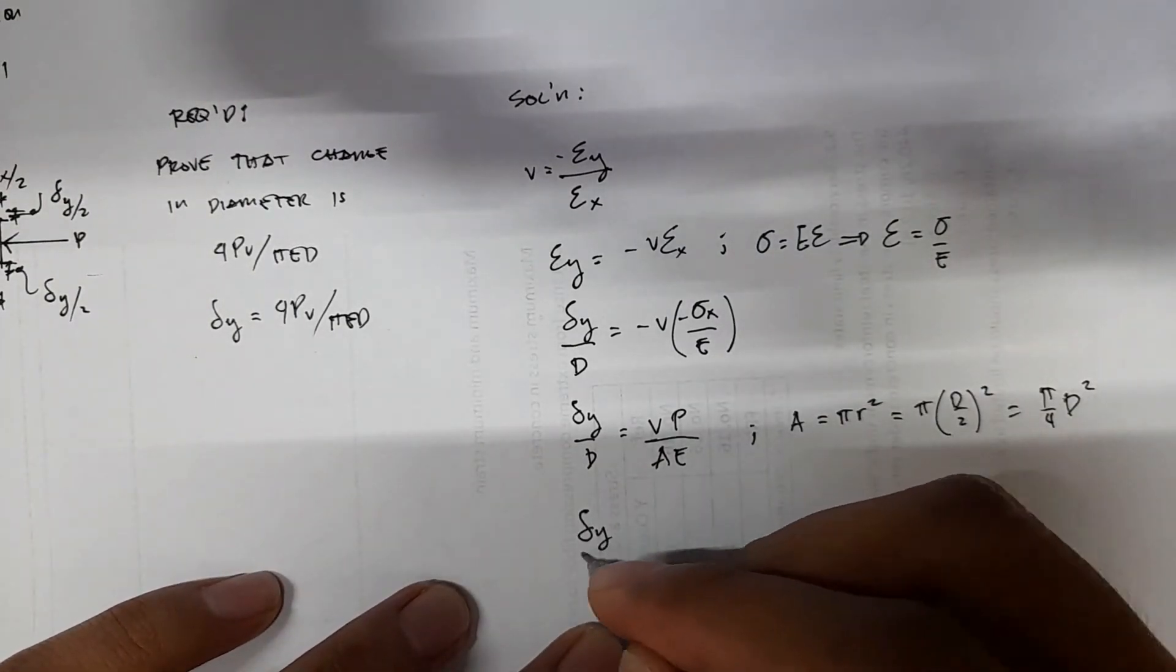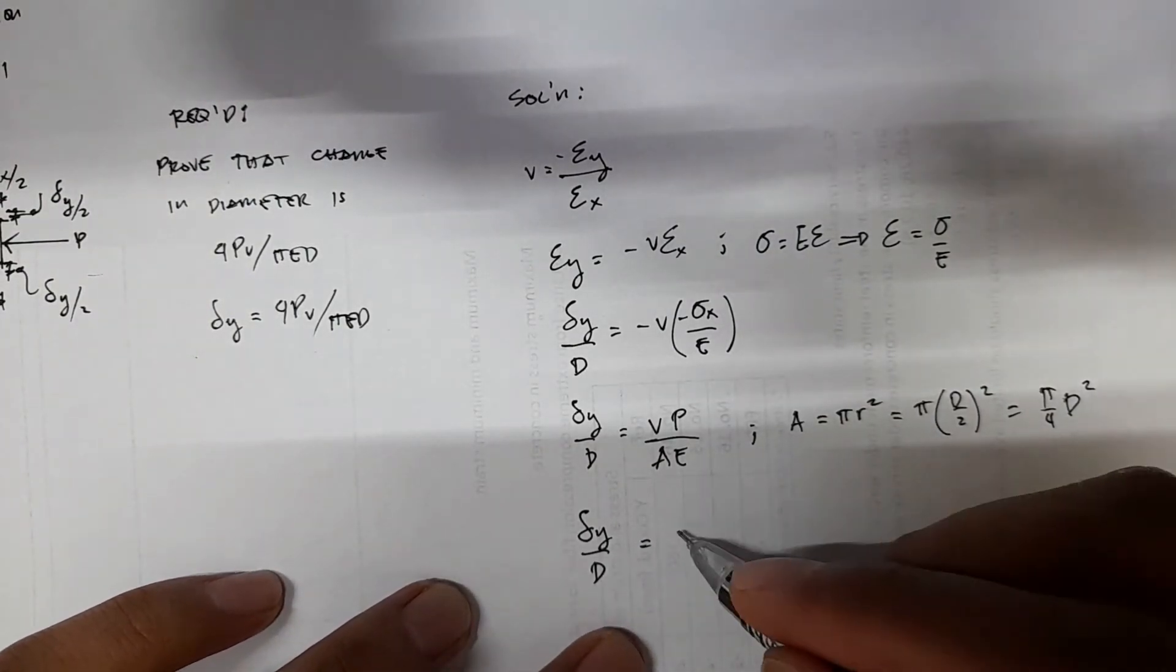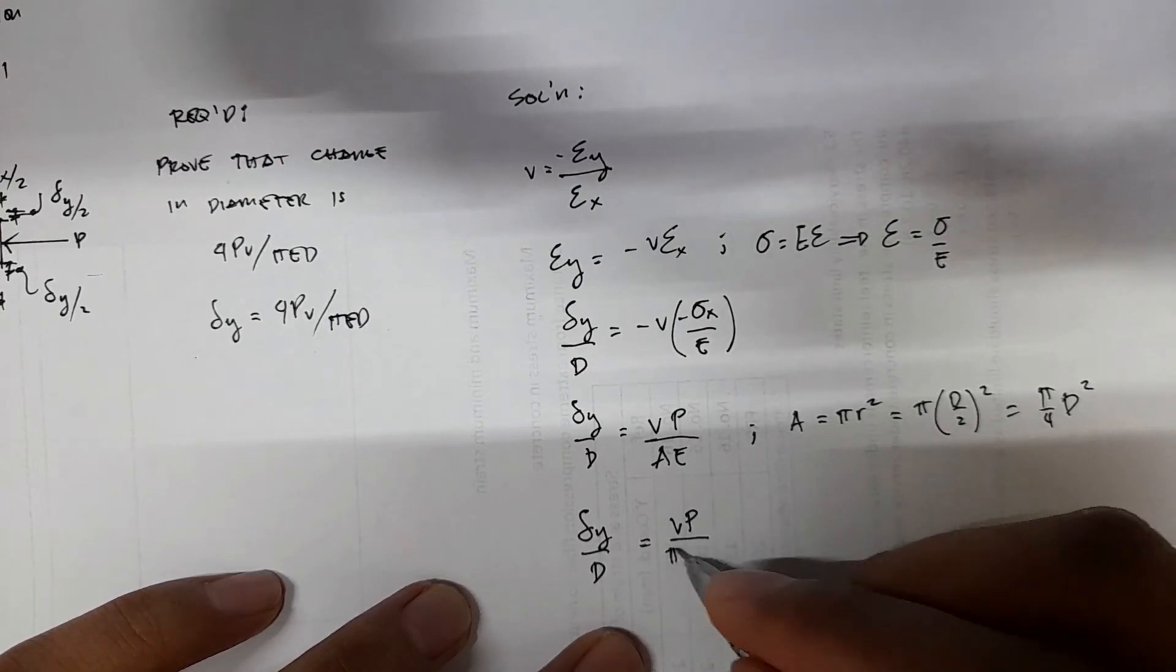So you have deformation y over D is just equal to VP over A, which is π/4 d² E.